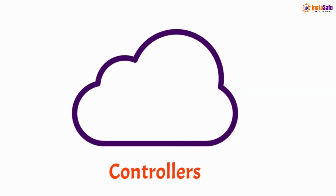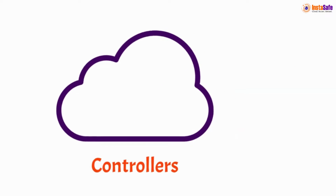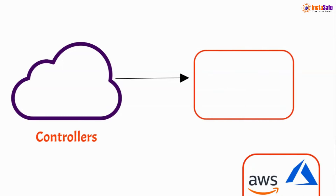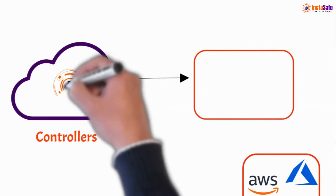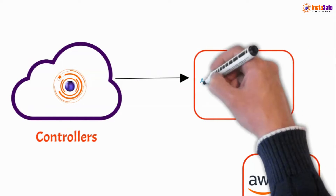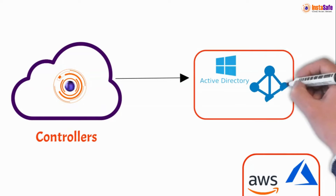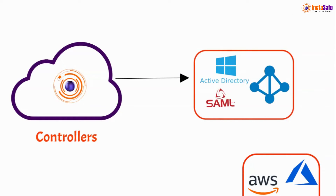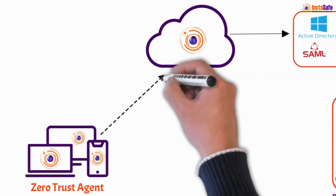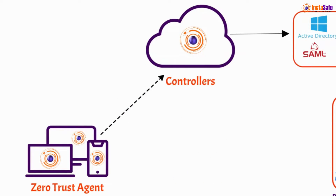Controllers are the decision-making components in ZTEA. They are connected to identity providers to gather information about the users trying to access the network. It has an inbuilt IDP for user and group management. The ZTEA Controller also supports Active Directory, Azure AD, and SAML assertions for application and network access. The client sends vital information about the user's device to the controller, which helps the controller in granting the level of access to the clients.